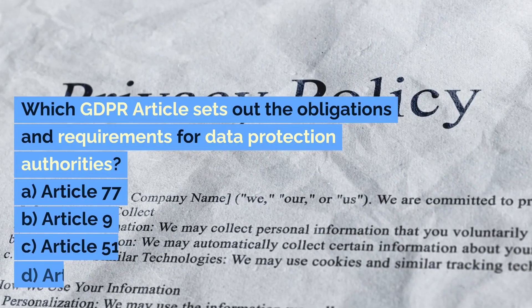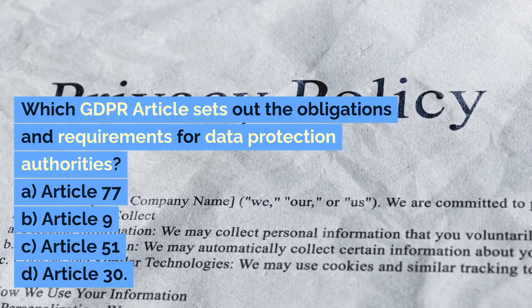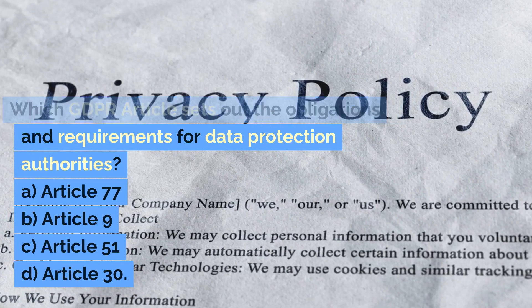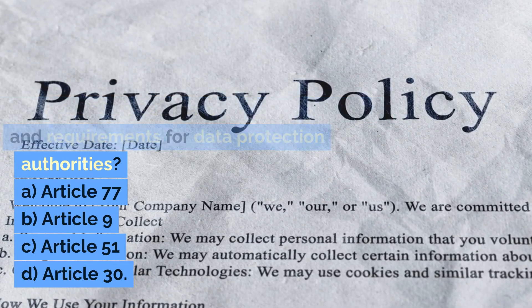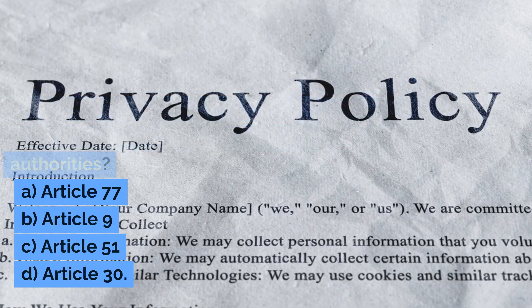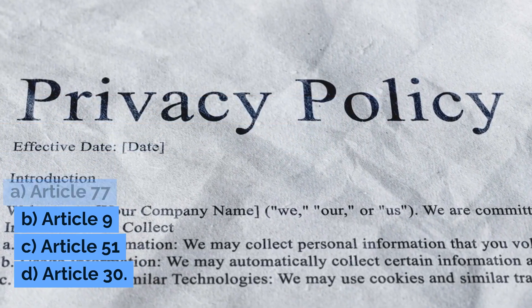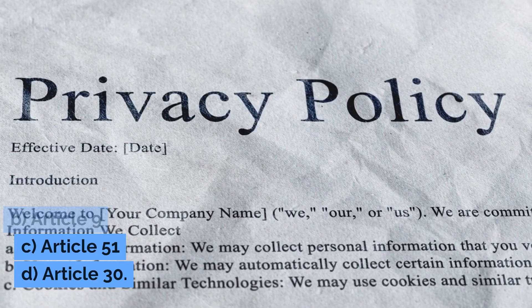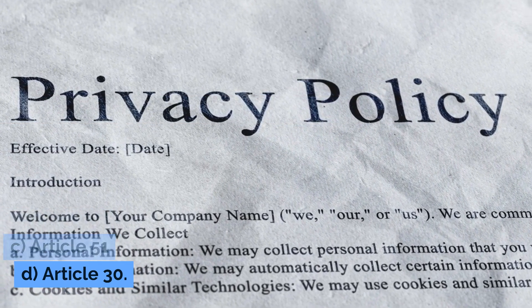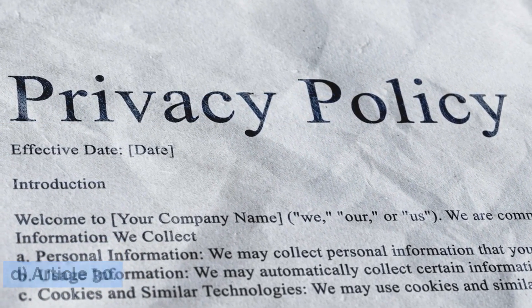Which GDPR article sets out the obligations and requirements for data protection authorities? A. Article 77, B. Article 9, C. Article 51, D. Article 30. Correct answer: C. Article 51.